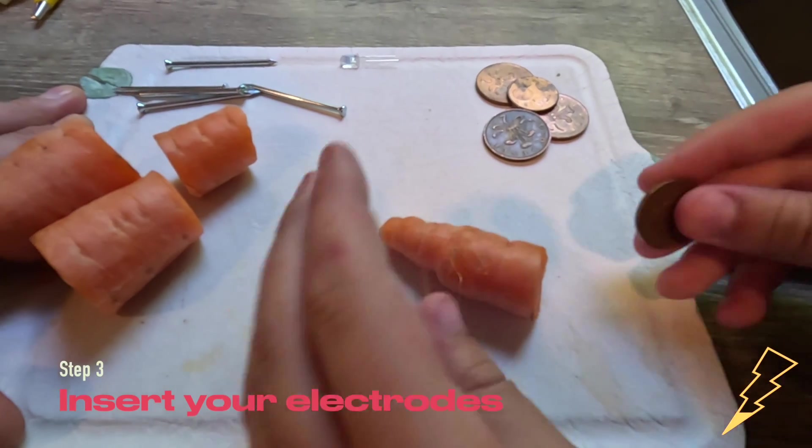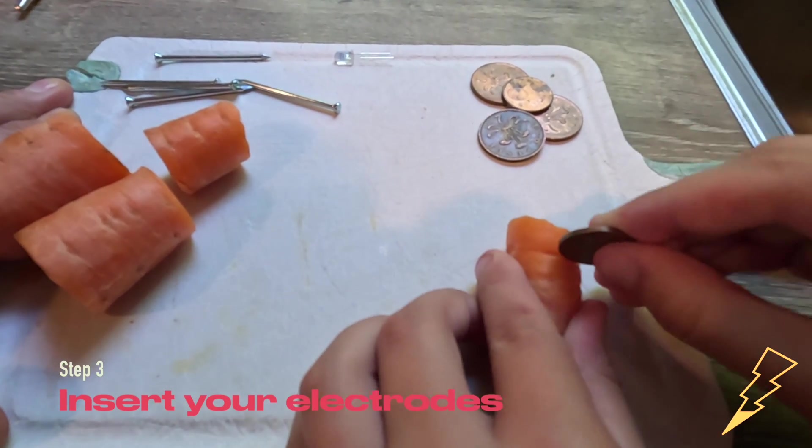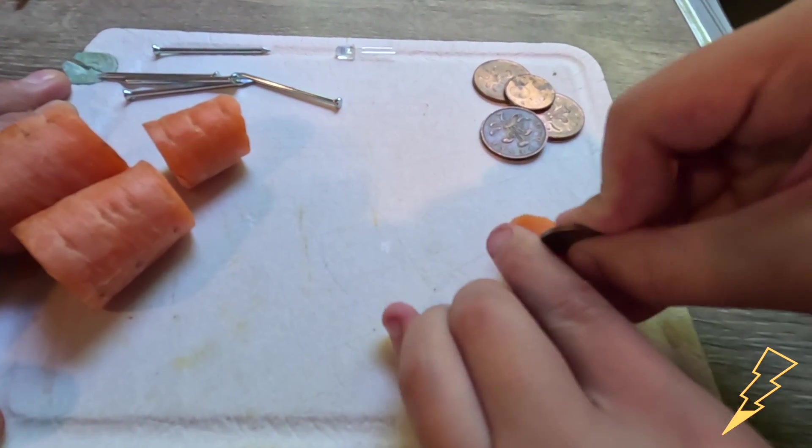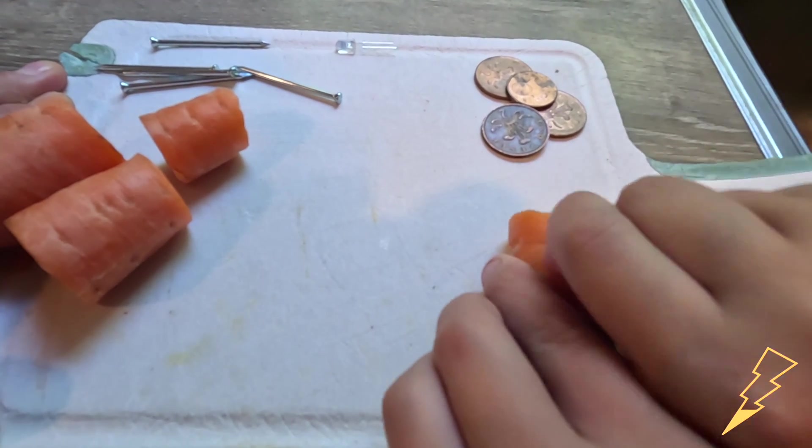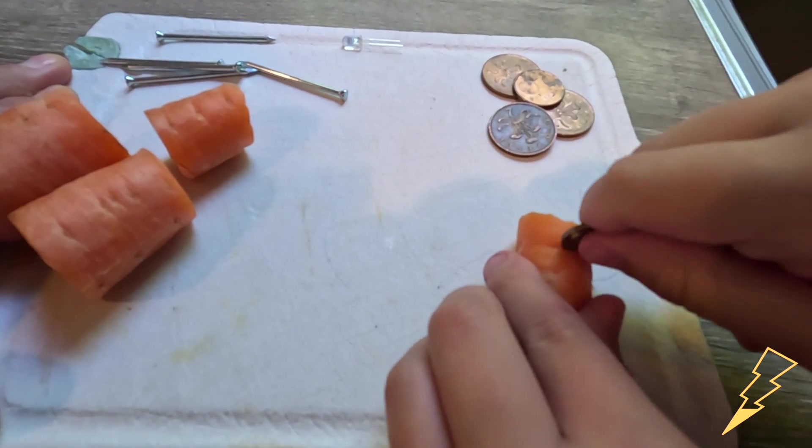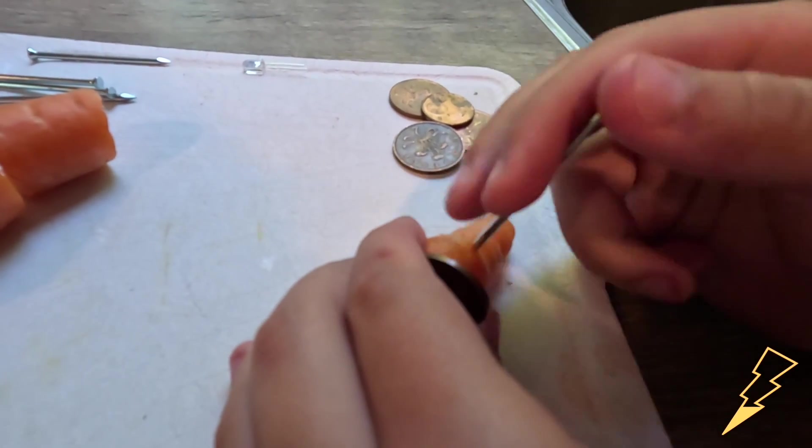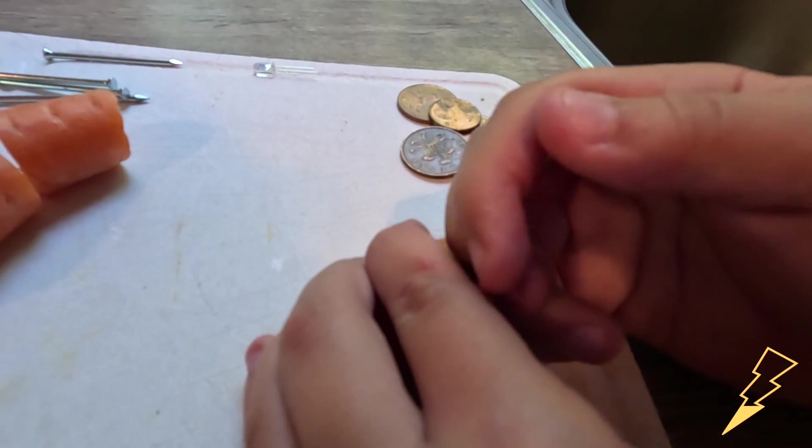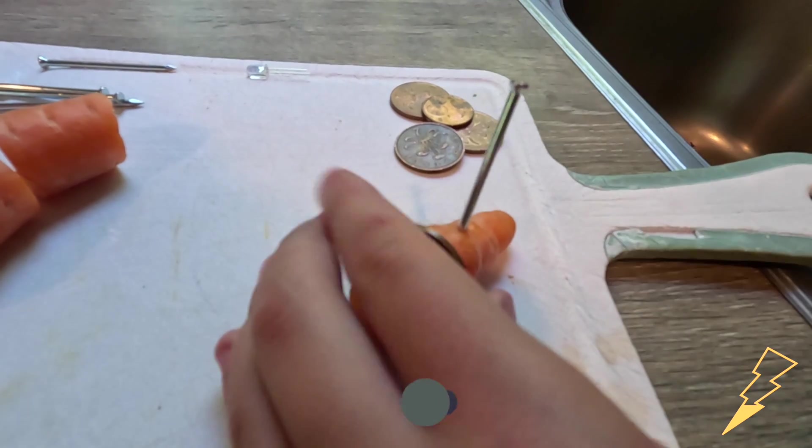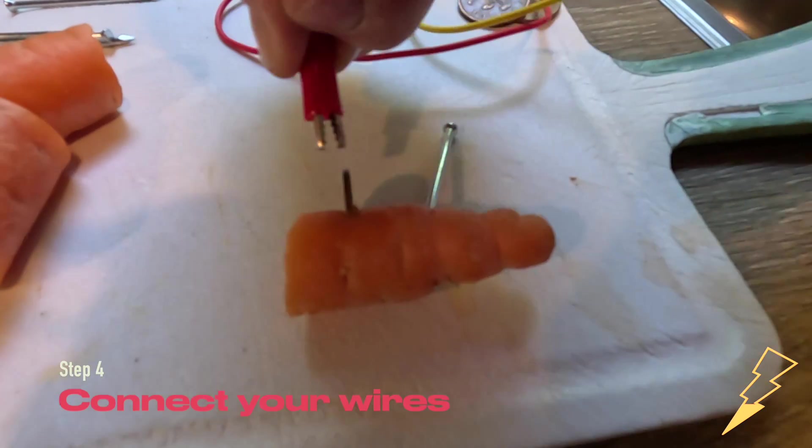Once you've got the carrot chunk, you need to put in a zinc nail and a copper coin and make sure they don't touch each other. It can be quite tricky. The copper coin can be quite tricky to put in, but the zinc nail should be much easier. Be careful, it's very sharp.